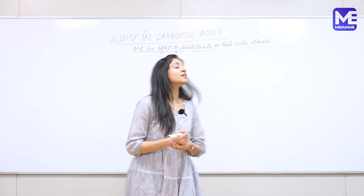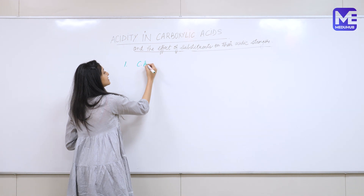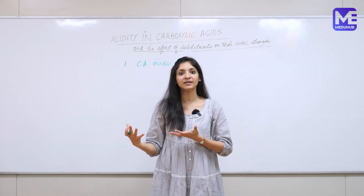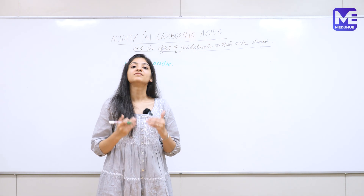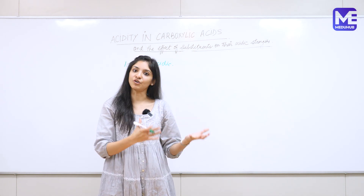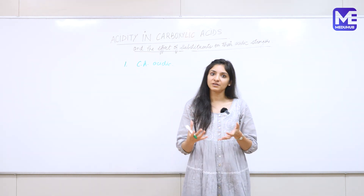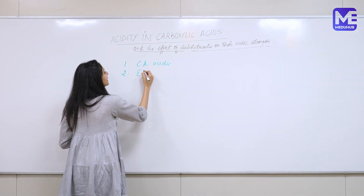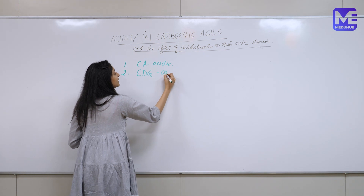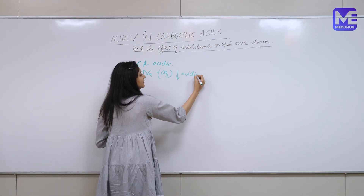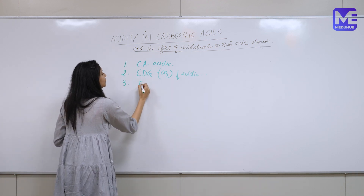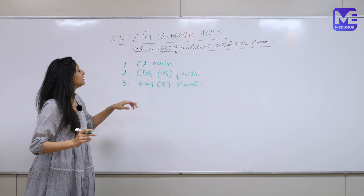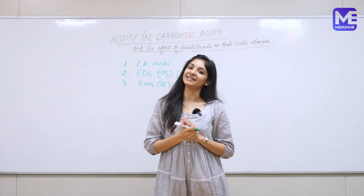Let us summarize what we learned today. First, we understood why carboxylic acids are acidic and how to qualitatively compare their acidity — we look at the stability of the conjugate base; the one with the more stable conjugate base is the stronger acid. We also understood how an electron donating group like CH3 reduces the acidity of a carboxylic acid, and how an electron withdrawing group increases the acidity of a carboxylic acid. That's it for today — see you in the next video.